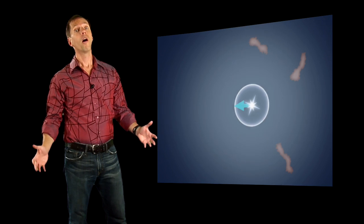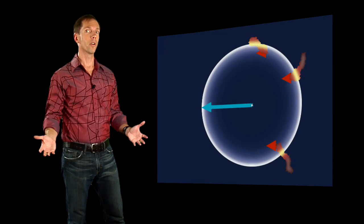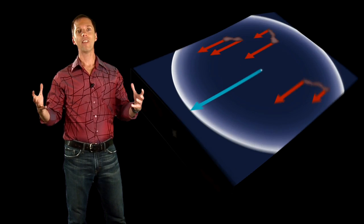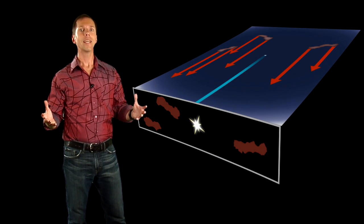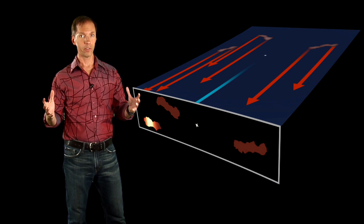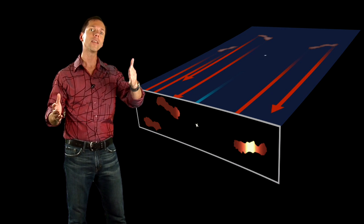But this light echo also reveals more than just the supernova. The expanding flash also lets astronomers study the three-dimensional structure of the dust by illuminating it one slice at a time.